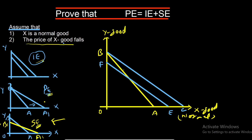Now find equilibrium positions on the graph. The initial equilibrium on budget line AB takes place at E1, where the consumer buys 5 units of the normal good. For substitution effect, the new line crosses AB and the new equilibrium takes place at E2. Drawing perpendiculars from E1 and E2 to the X axis, we find quantities of 5 units and 10 units respectively.